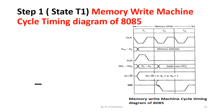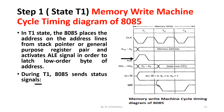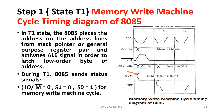Step 1, T1 state: the 8085 places the address on the address lines from the stack pointer or general purpose register pair, and activates the Address Latch Enable (ALE) signal in order to latch the low-order byte of the address. The ALE signal activates the low-order address lines. During T1 state, the 8085 sends status signals IO/Memory bar = 0, S1 = 0, S0 = 1 for the memory write machine cycle, as represented here.